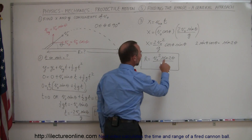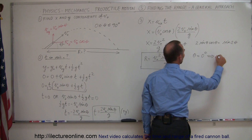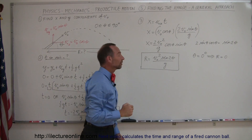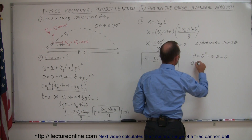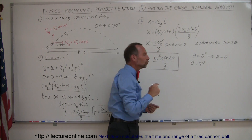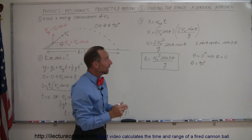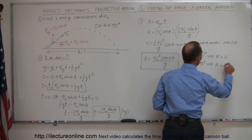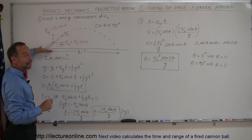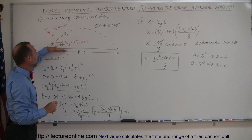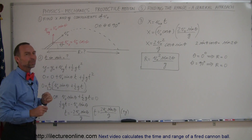If we plug in 0 degrees, the sine of 0 is 0, so the range is 0. If theta equals 90 degrees, then 2 times 90 is 180 degrees, and the sine of 180 degrees is also 0 — so the range is 0 again. That makes sense: at 0 degrees there's no height and the projectile won't get anywhere, and at 90 degrees the projectile goes straight up and down, so the range is also 0.